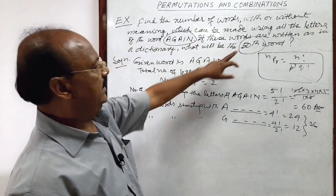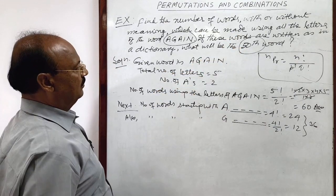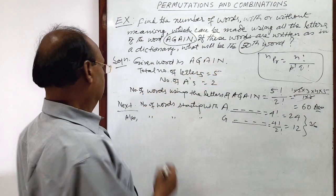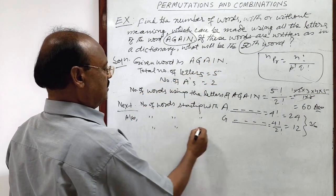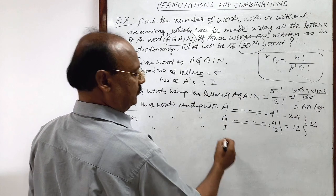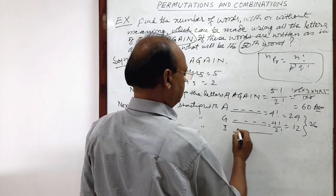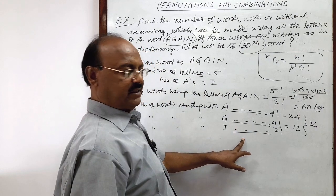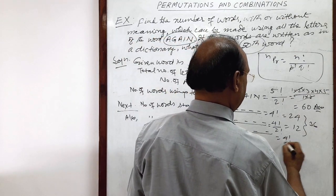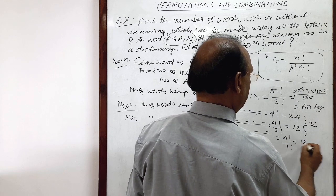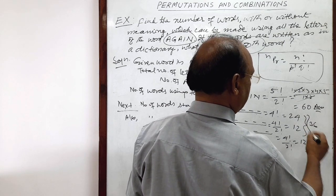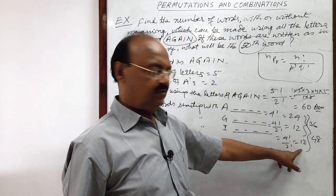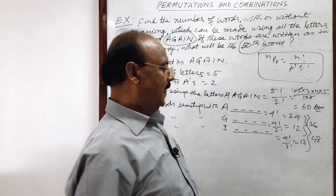But we have to find out 50th word. Now, after G, words will start with I. Number of words starting with I. Rest 4 letters will be here, 1, 2, 3, 4. A is twice here. Here also this is 4 factorial by 2 factorial. This is 12. Here total number of words formed is 48, 24 plus 12 plus 12, 48.